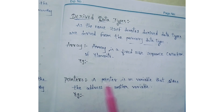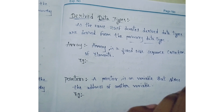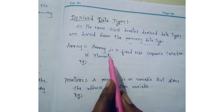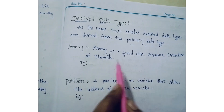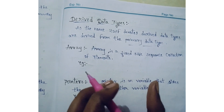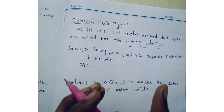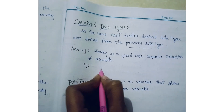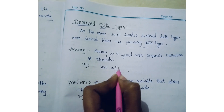Array is a fixed size sequence collection of elements. For example, int a of 5 — this declares an array of 5 integer elements.